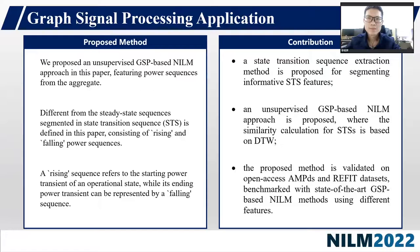Driven by the shortcomings of current works, an unsupervised GSP-based NILM approach is proposed in this paper, featuring power sequences from the aggregate. Different from the steady-state sequences segmented in reference-2, a steady-transition sequence (STS) is defined in this paper, consisting of rising and falling power sequences. Our main contributions include: first, a steady-transition sequence extraction method is proposed for segmenting informative STS features. Second, an unsupervised GSP-based NILM approach is proposed, where the similarity calculation for STS is based on DTW. Third, the proposed method is validated on IHEPC, AMPDS, and REFIT datasets, benchmarked against state-of-the-art GSP-based NILM approaches using different features.